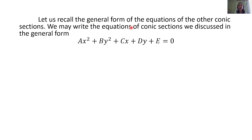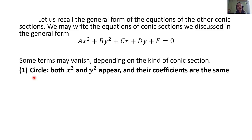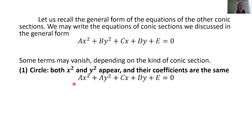Let us recall the general form of the equations of other conic sections. We may write the equations of conic sections in the general form: Ax squared plus By squared plus Cx plus Dy plus E is equal to 0. Some terms may vanish depending on the kind of conic section. For a circle, both x squared and y squared appear and their coefficients are the same.